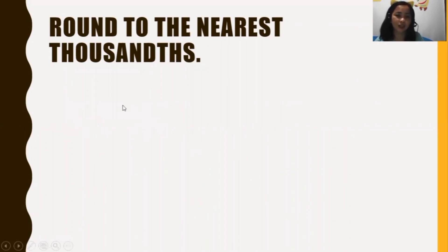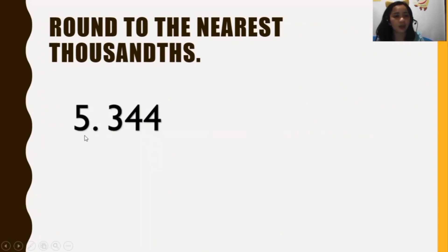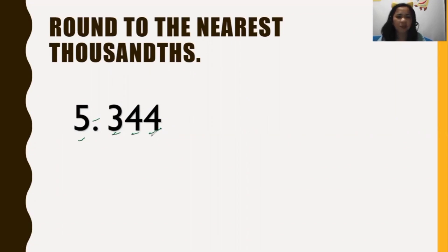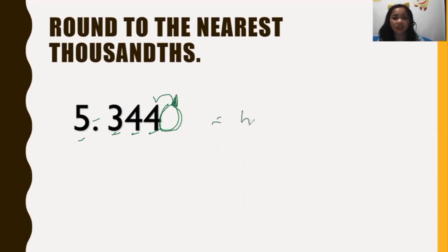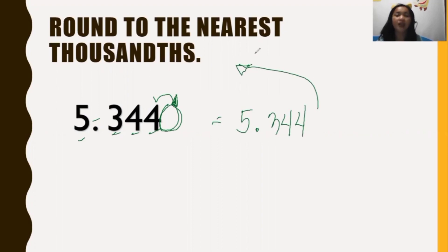Another example: round to the nearest thousandths. We have five and three hundred forty-four thousandths (5.344). Kung paano ira-round dyan, wala namang nakalagay na number sa kanan. So, the imaginary digit is zero. Since zero means round down, the digit is retained and walang pagbabago. The answer is still five and three hundred forty-four thousandths (5.344).